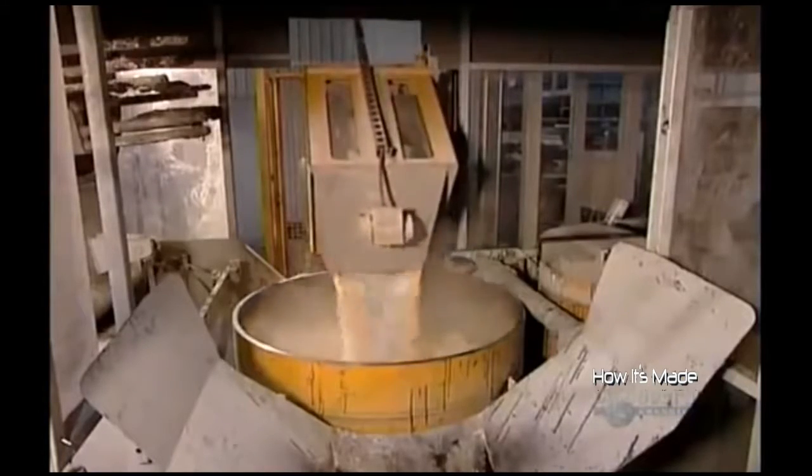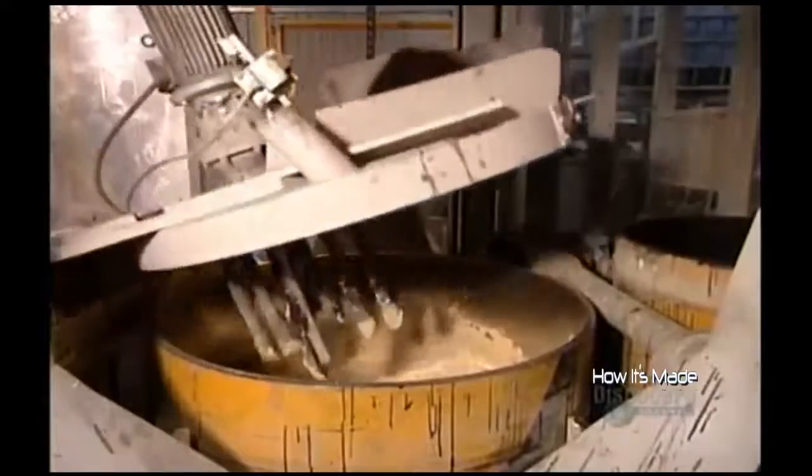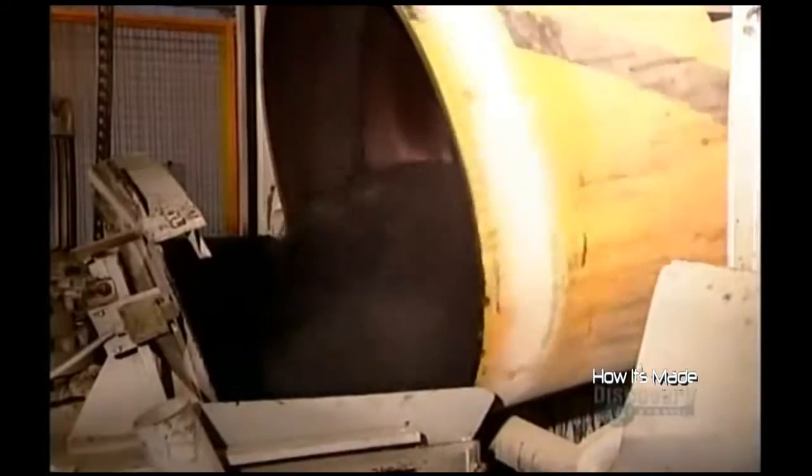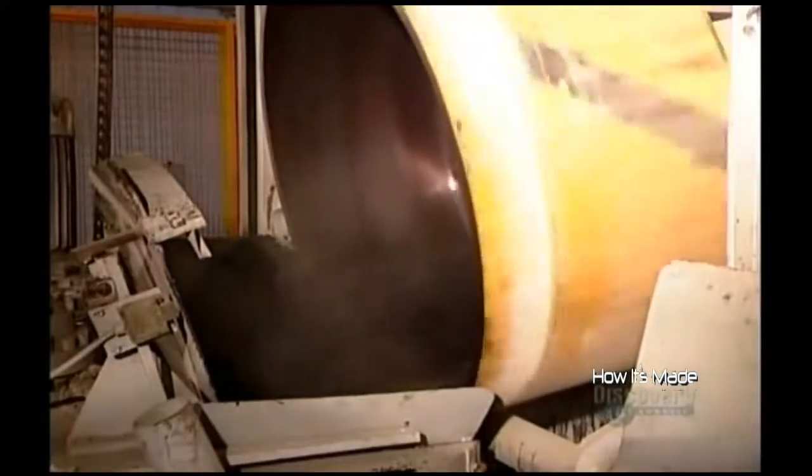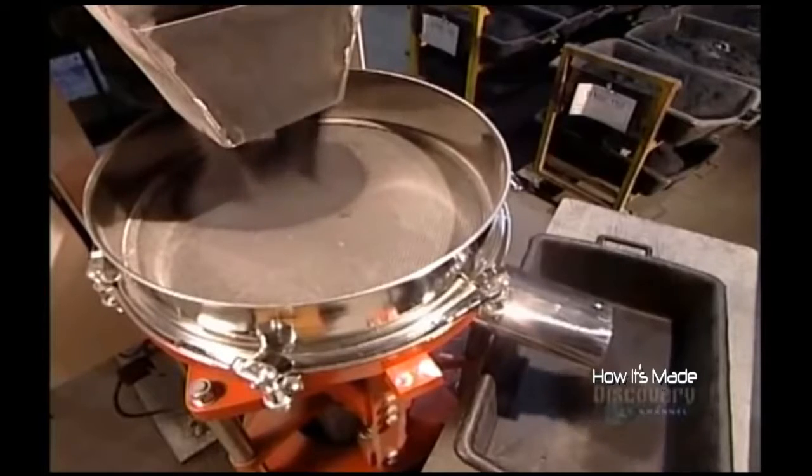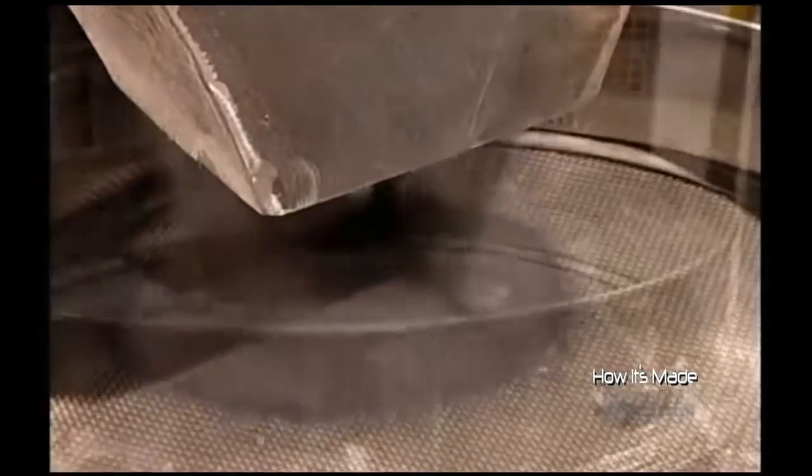The powdered resin and additives are the first ingredients to go into the mixer. After about a minute, the abrasives and liquid resin go in. Another five minutes of churning, and the mixture is the consistency of damp beach sand. They screen out any globs or chunks so that the mix has a smooth and even texture.